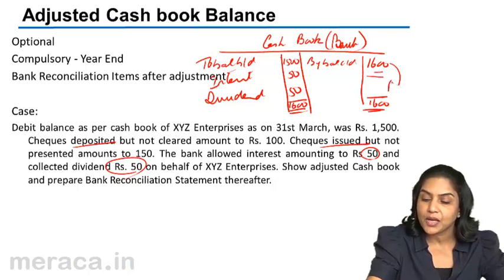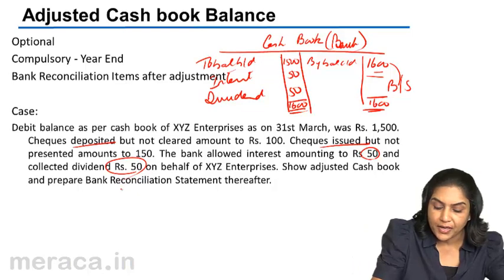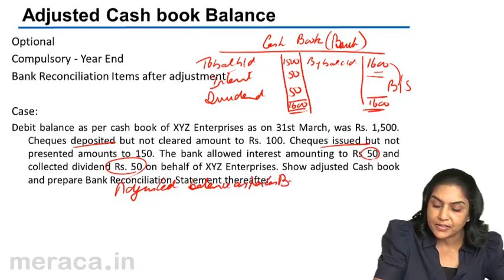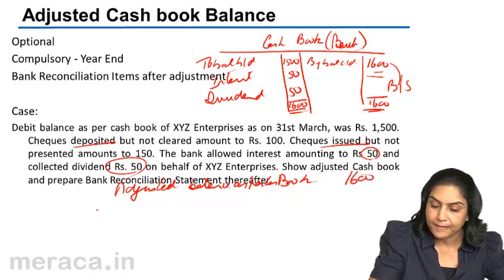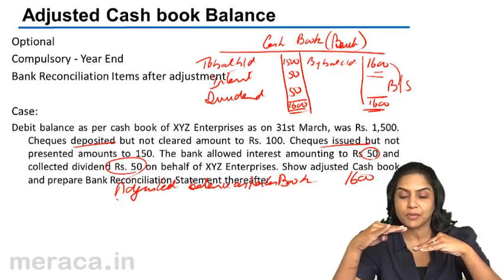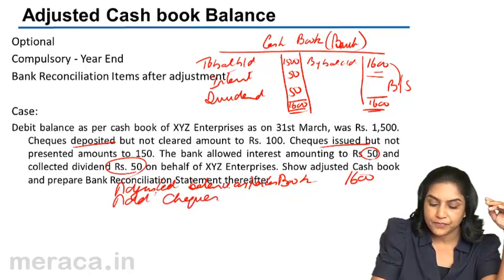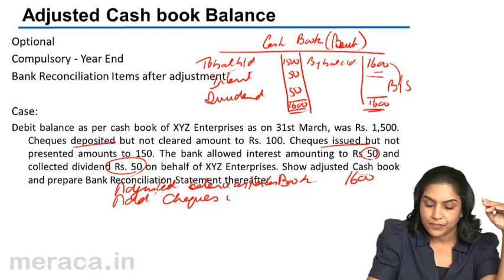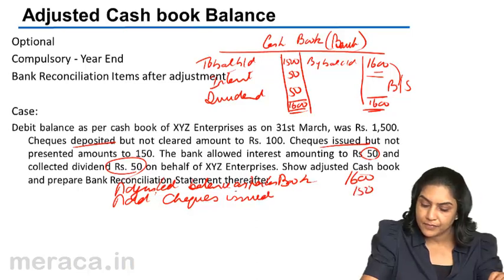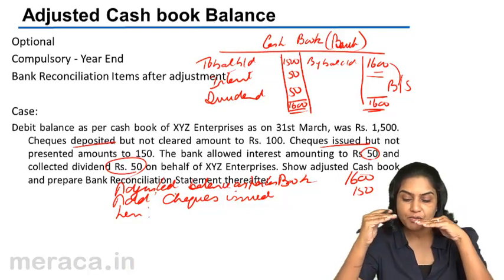A bank reconciliation statement would then start with the adjusted cash book balance. We take the adjusted balance as per the cash book. This is the bank balance of Rs1,600. Now, checks issued but not yet presented — when checks are issued the cash book balance is reduced. To move from the cash book to the bank balance, we would add back checks issued. As for checks deposited but not yet cleared — when checks are deposited, the cash book balance increases. To arrive at the bank balance, we would deduct checks deposited but not yet cleared.